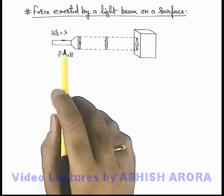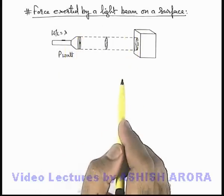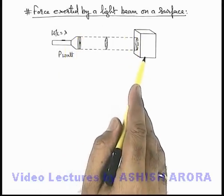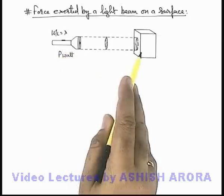Let us study the force exerted by a light beam on a surface. Here we can see there is a box on which a light beam emitted from a source of power P watts is incident.